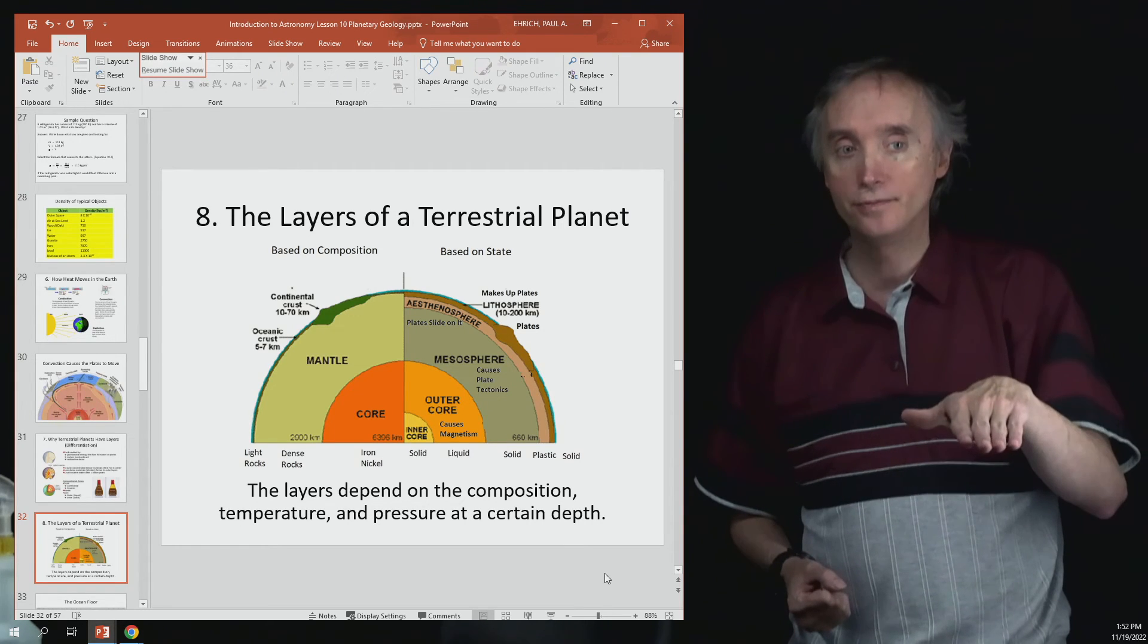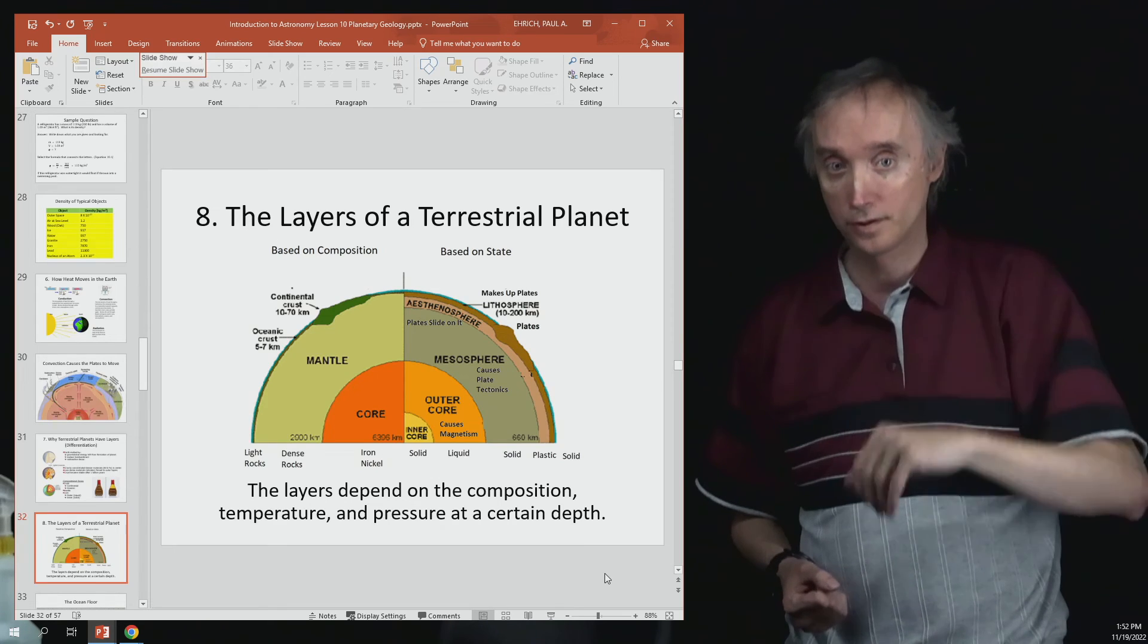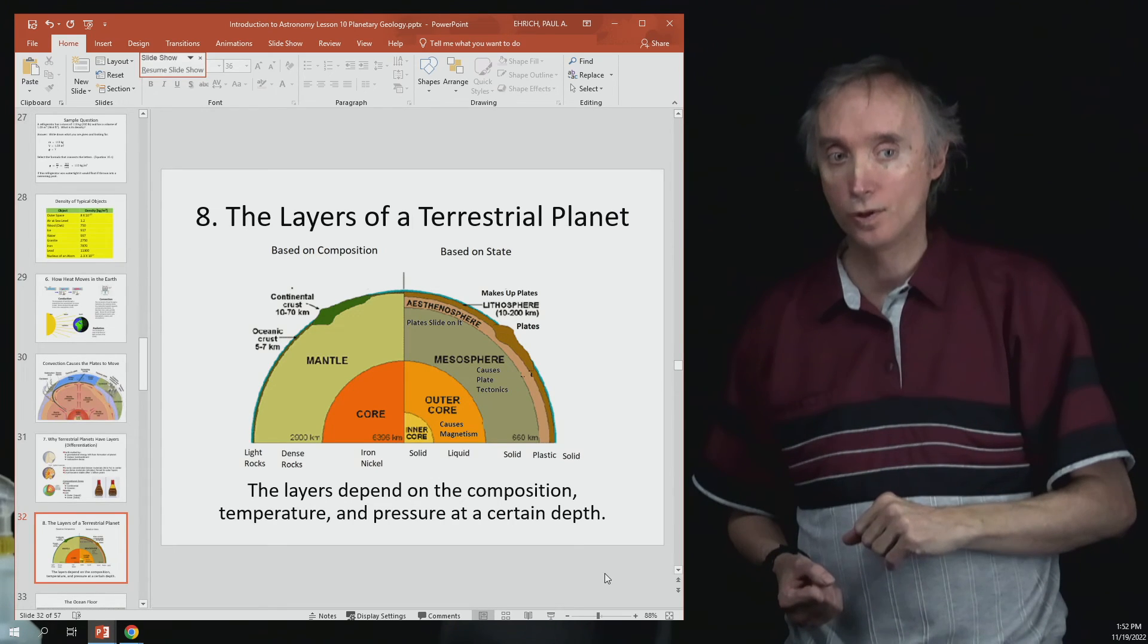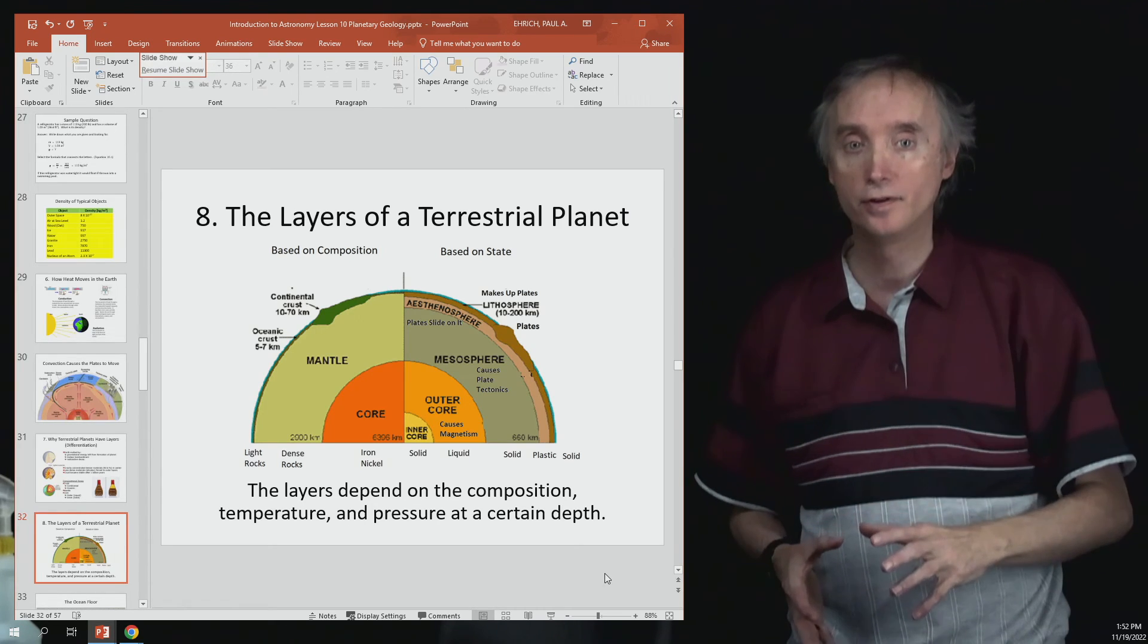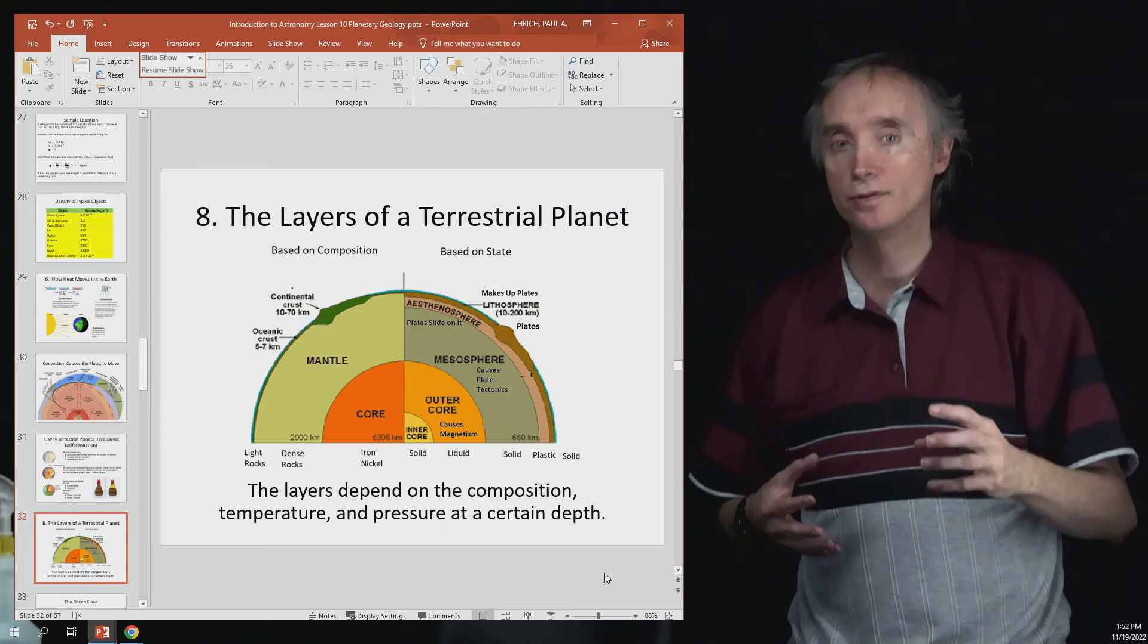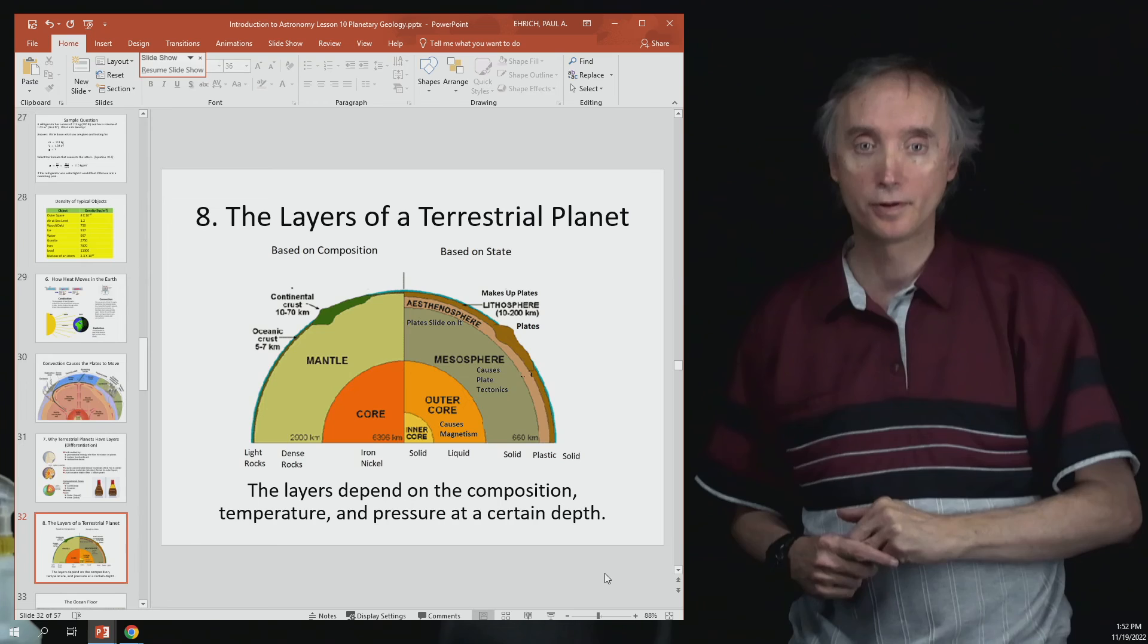And then above that is the solid lithosphere. And so what do you think is winning there? Well now the pressure is winning again. So it is not hot enough to be able to turn the lithosphere into a liquid up there. So kind of interesting.